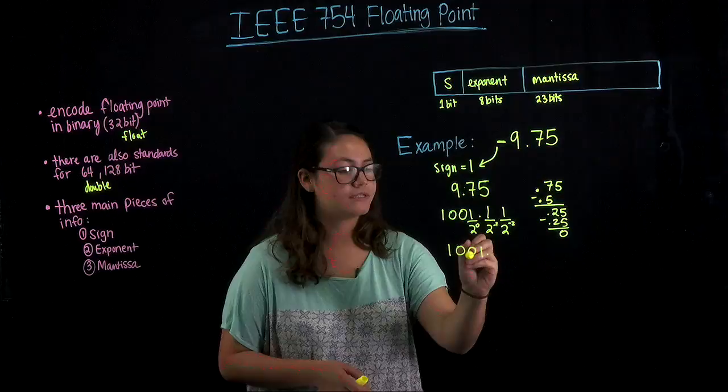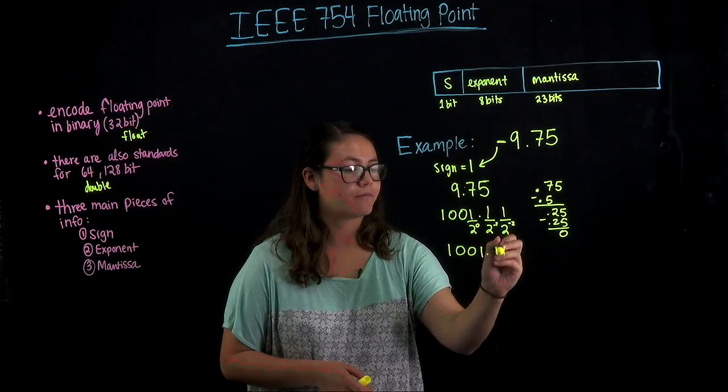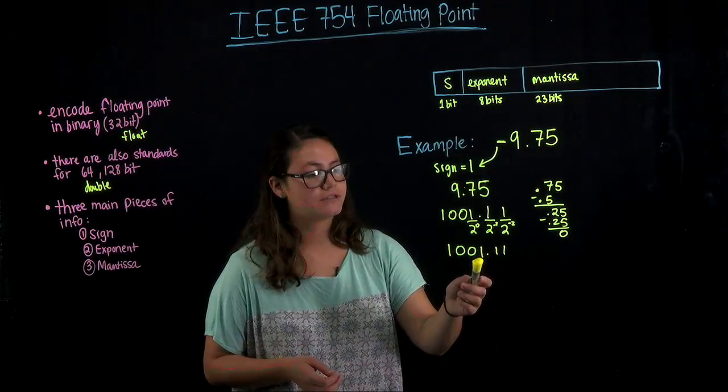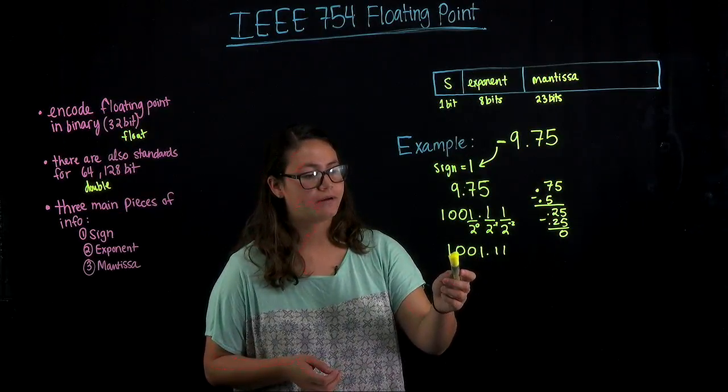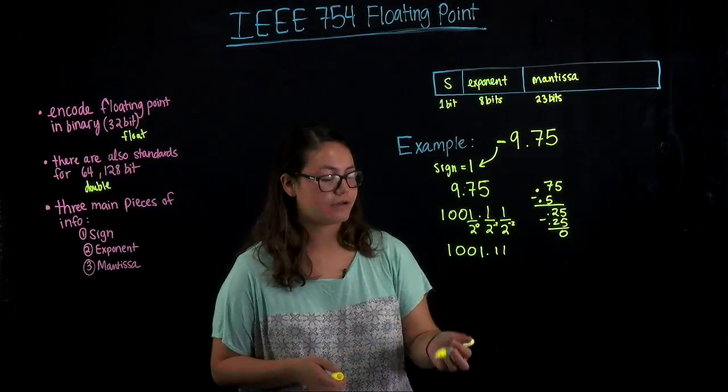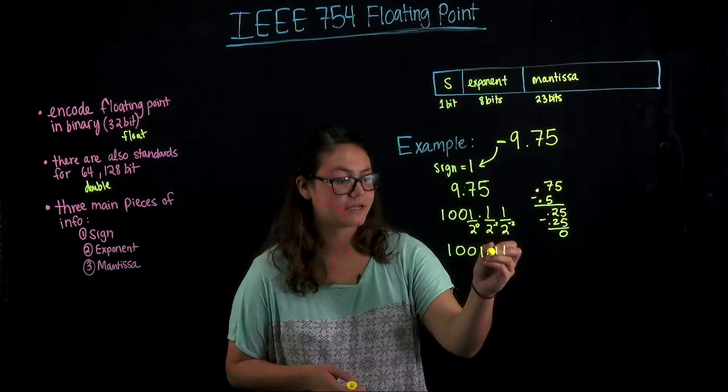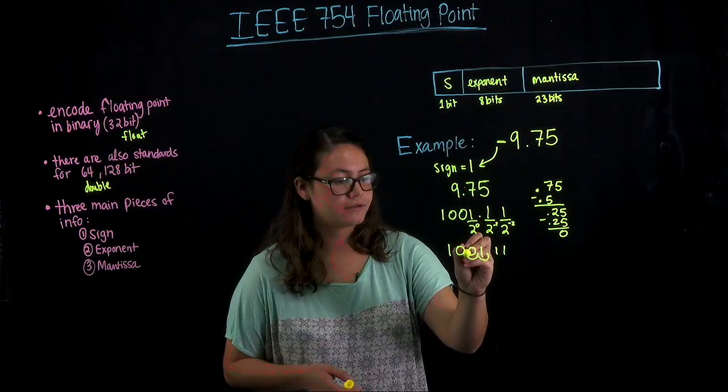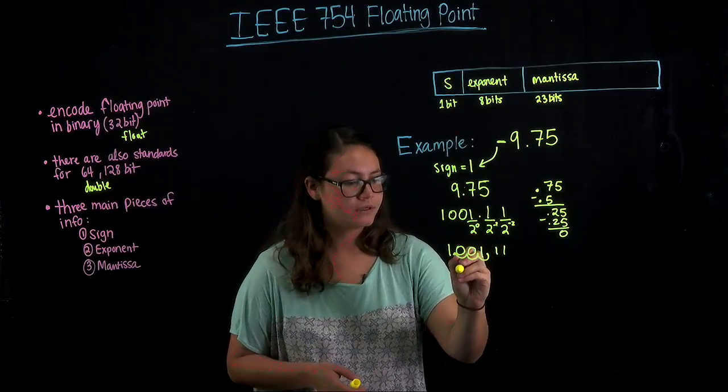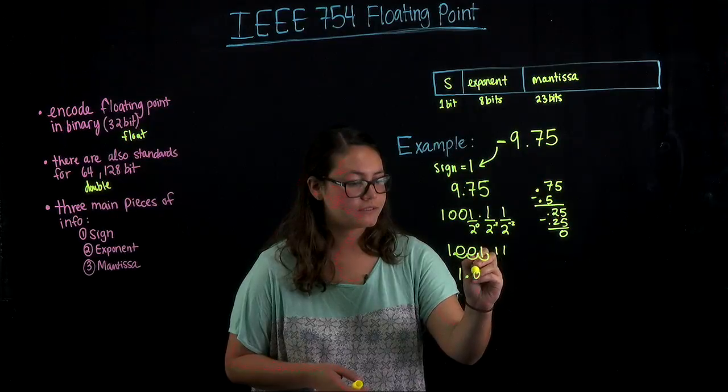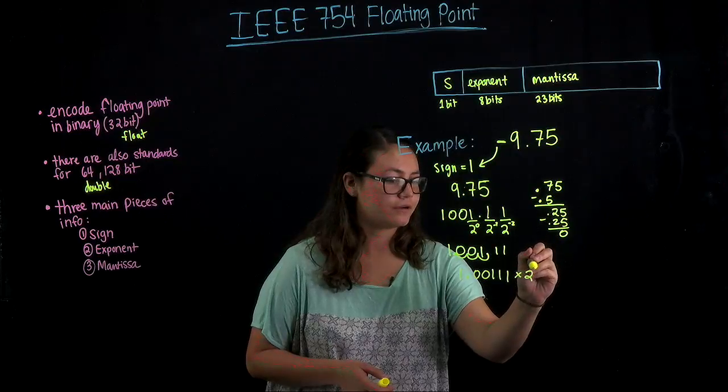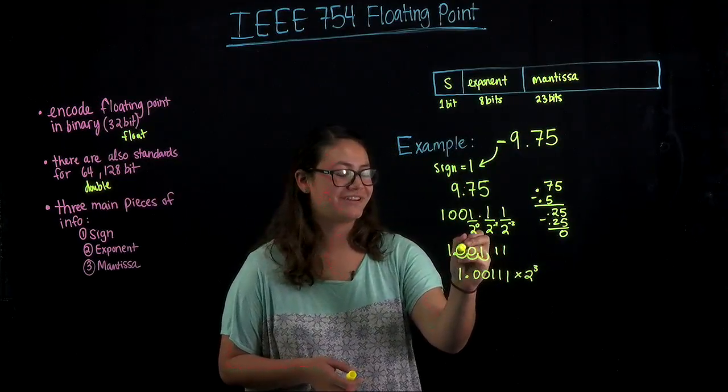So we get 1001.11. The next step that we're going to do is we're going to float the point over to the front of the number, just like you would do for scientific notation. You just float it over 1, 2, 3, and you get 1.00111 times 2 to the third.